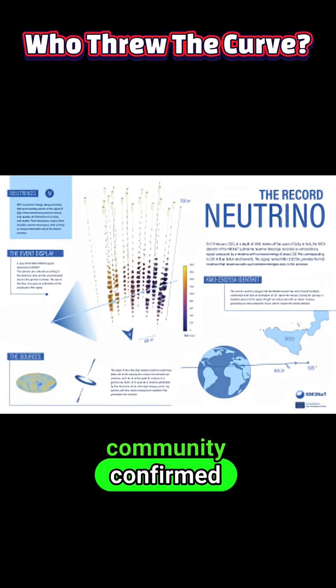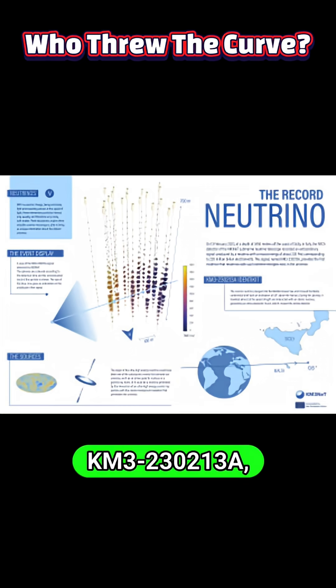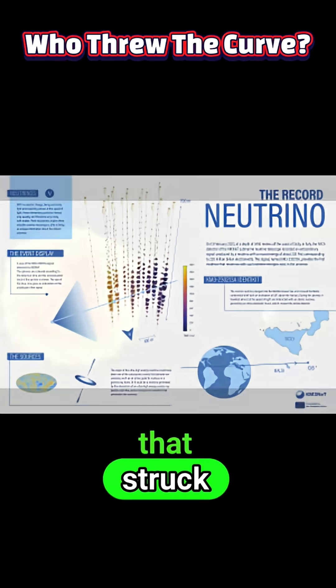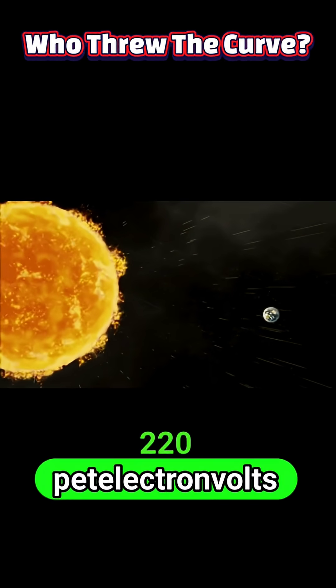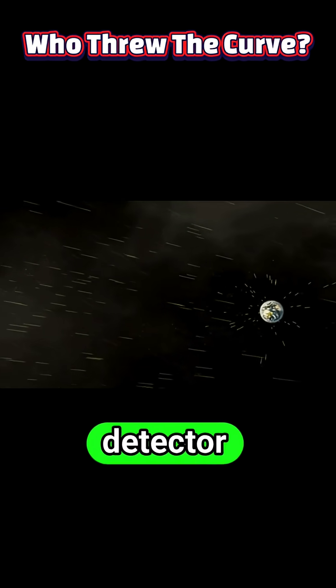The scientific community confirmed the detection of an unprecedented high-energy neutrino event designated KM3-230213A, a single particle that struck Earth carrying an estimated 220 peta-electron volts of energy, a signal verified after exhaustive analysis of the detector data.